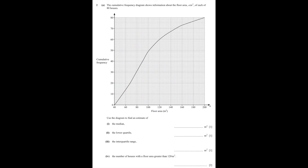In this exam question, the cumulative frequency diagram shows information about the floor area, a metres squared, of each of 80 houses. We have to find an estimate of the median. The median is the middle value when data is organised from smallest to largest. To find the middle value of 80 houses, take 80 divided by 2, which gives 40. Find 40 along the y-axis where it says cumulative frequency, travel towards your graph, and when you hit the graph, travel down to read off the corresponding floor area value. The median is exactly halfway between 80 and 100, so the median is 90.